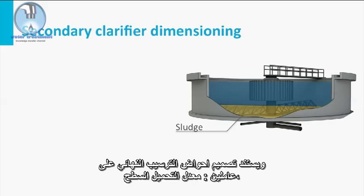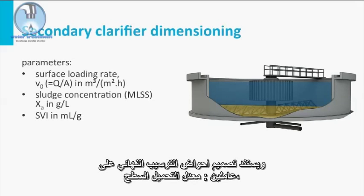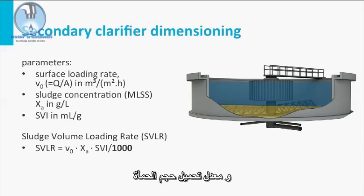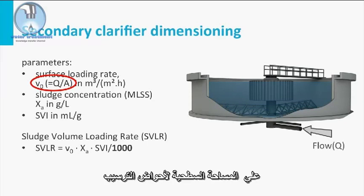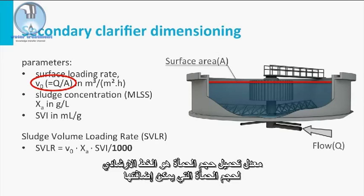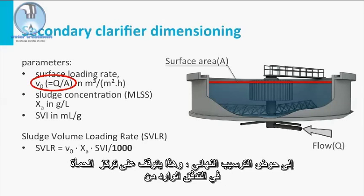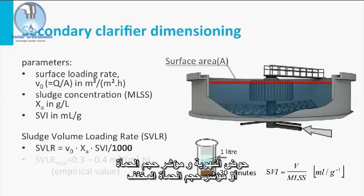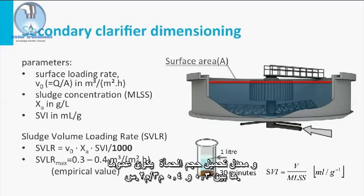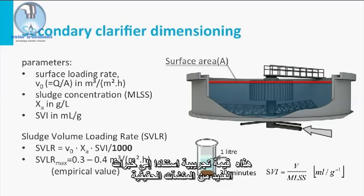The final clarifier design is based on two parameters. The surface loading rate is the simplest, as it is nothing more than the flow divided by the surface area of the clarifier tanks. The sludge volume loading rate is a guideline for the volume of sludge that can be added to a final clarifier, depending on the sludge concentration in the flow from the aeration tank and the sludge volume index or diluted sludge volume index. The sludge volume loading rate generally lies between 0.3 and 0.4 cubic meters per square meter per hour. This is an empirical value, based on experiences of many full-scale installations.